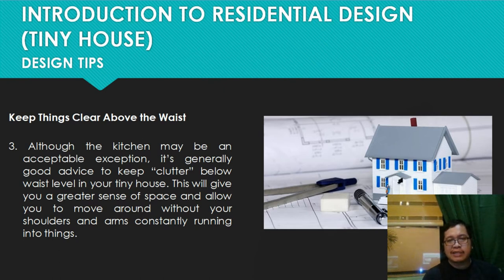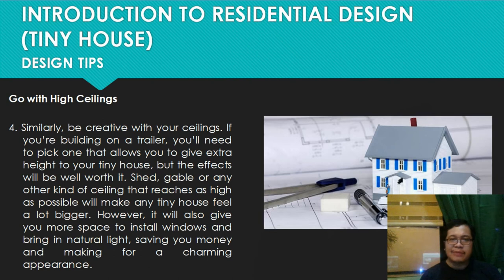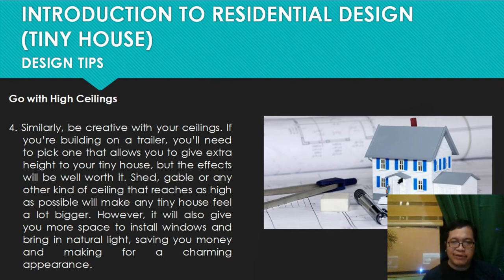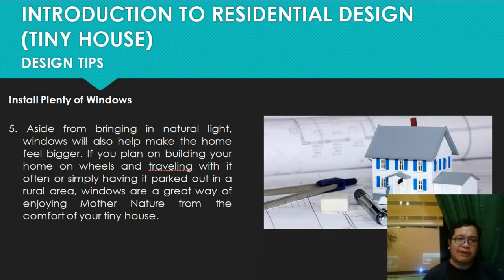Next, go with high ceilings. If you're building on a trailer, pick one that allows extra height for your tiny house — the effects will be well worth it. A shed, cable, or any ceiling that reaches as high as possible will make a tiny house feel a lot bigger, and it gives more space to install windows and bring in natural light, saving you money. Fifth, install plenty of windows. Aside from bringing in natural light, windows also make the home feel bigger. If your home is on wheels or parked in a rural area, windows are a great way to enjoy nature.